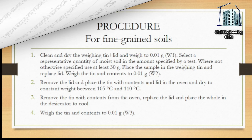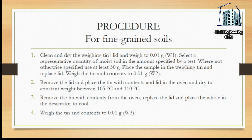Procedure for fine grained soils: clean and dry the weighing tin plus lid and weigh to 0.01 grams (W1). Select a representative quantity of moist soil — at least 30 grams. Place the sample in the weighing tin, replace the lid, and weigh the tin and contents to 0.01 grams (W2).